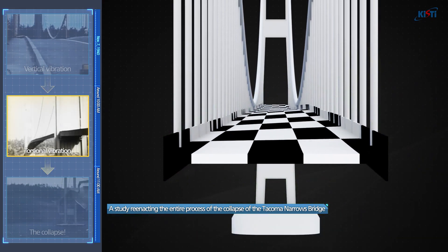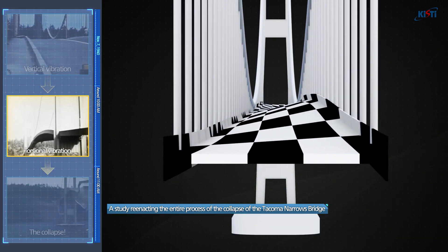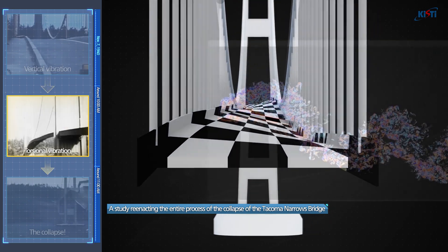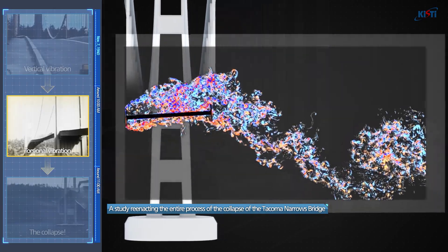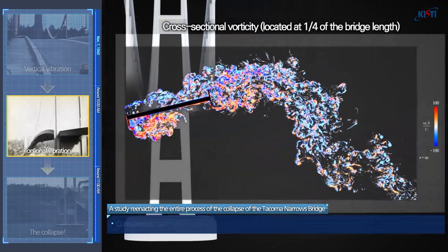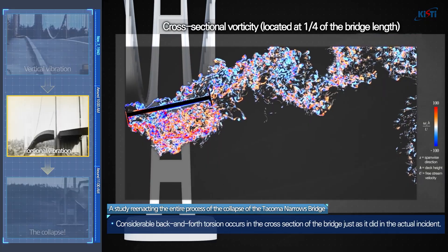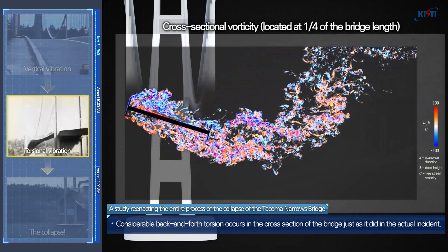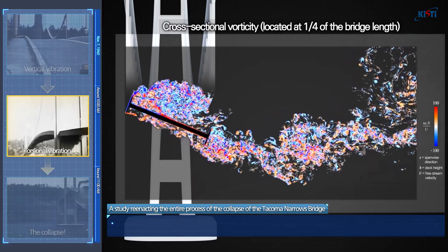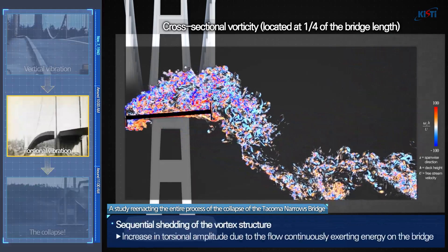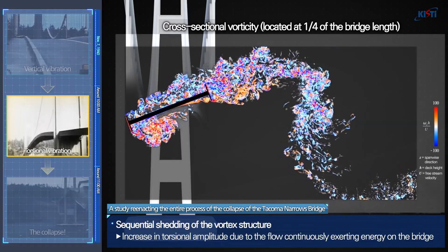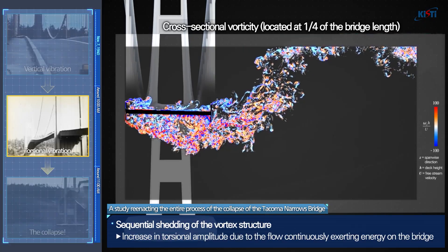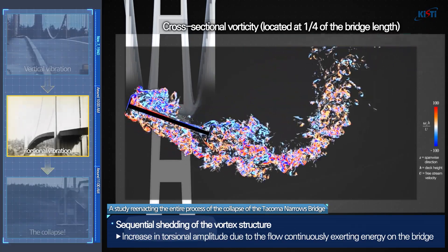Looking at it from the front, you can tell how dangerous the severe torsion on the verge of the collapse must have been. Looking at the cross section of the bridge, you can tell that considerable back-and-forth torsion is occurring in the cross section, just as it did in the actual incident. Furthermore, you can see the vortex structure shed sequentially from the leading edge of the bridge section. According to the computations, we were able to confirm that the torsional amplitude increased due to the flow continuously exerting energy on the bridge.